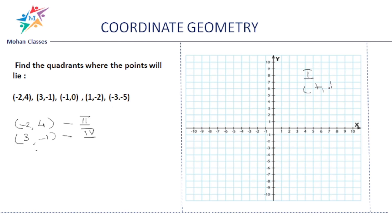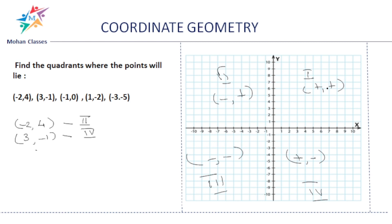Remember: first quadrant is plus, plus; second quadrant is minus, plus; third quadrant is both minus, minus; fourth quadrant is plus, minus. You can also note that first and third quadrants are opposites — plus, plus versus minus, minus — and second and fourth are opposites. For the point (−1, 0): x is negative, and since y is 0, it lies on the boundary. We can take it as the second quadrant here.